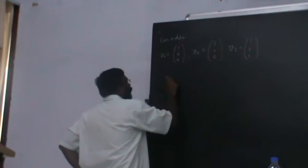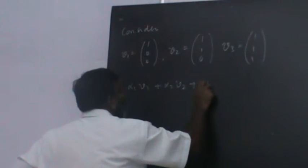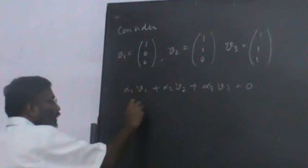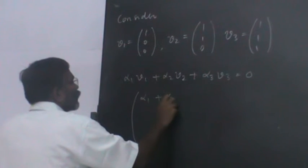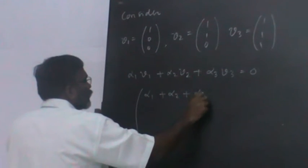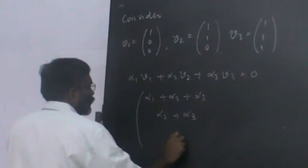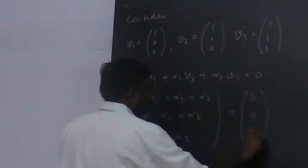You take alpha 1 V1, plus alpha 2 V2, plus alpha 3 V3, is equal to zero. That means what I will call alpha 1 plus alpha 2 plus alpha 3, alpha 2 plus alpha 3, alpha 3, is equal to 0, 0, 0.